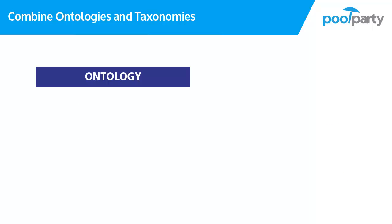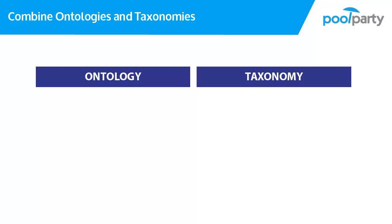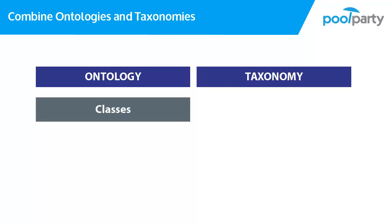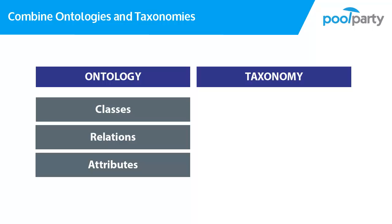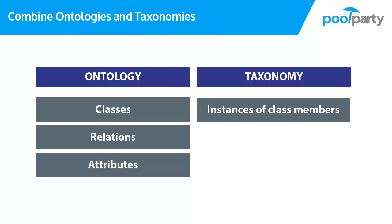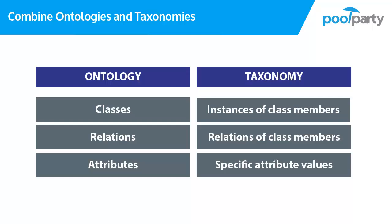This is how ontologies and taxonomies work together. In the ontology, you define which classes, relations and attributes you want to be able to model. In the taxonomy, you then use these classes, relations and attributes to enrich your data model and add more information. In the next sessions, you will see how you can create and use ontologies in PoolParty. Stay tuned!